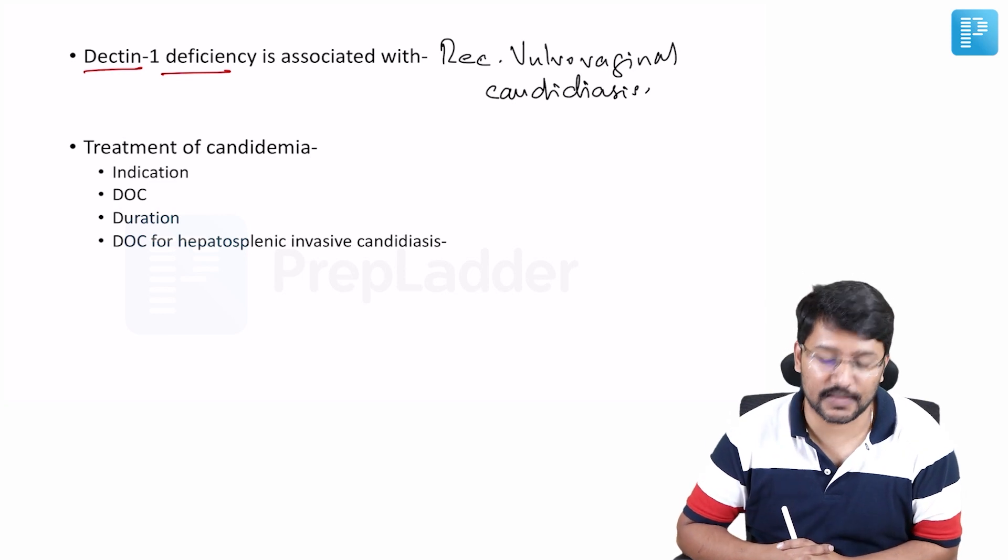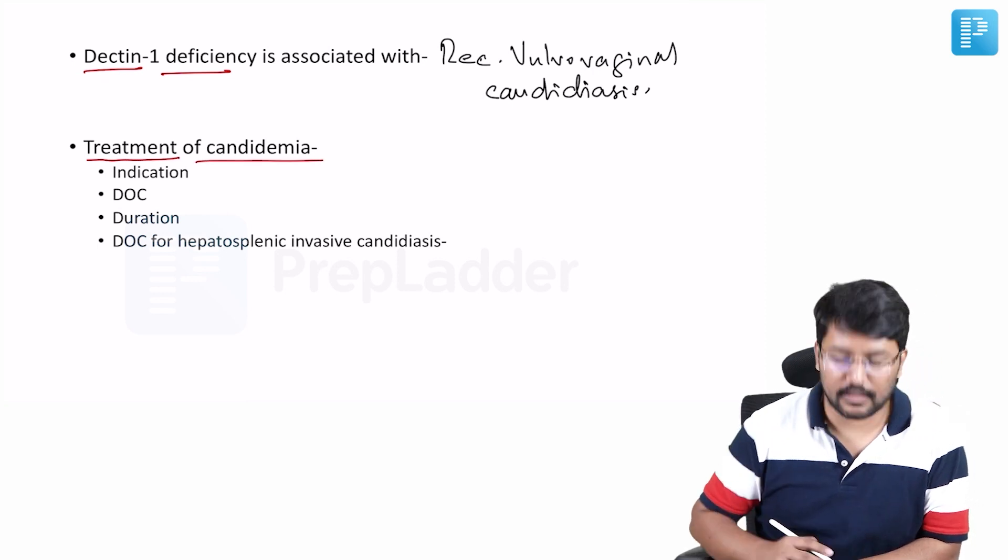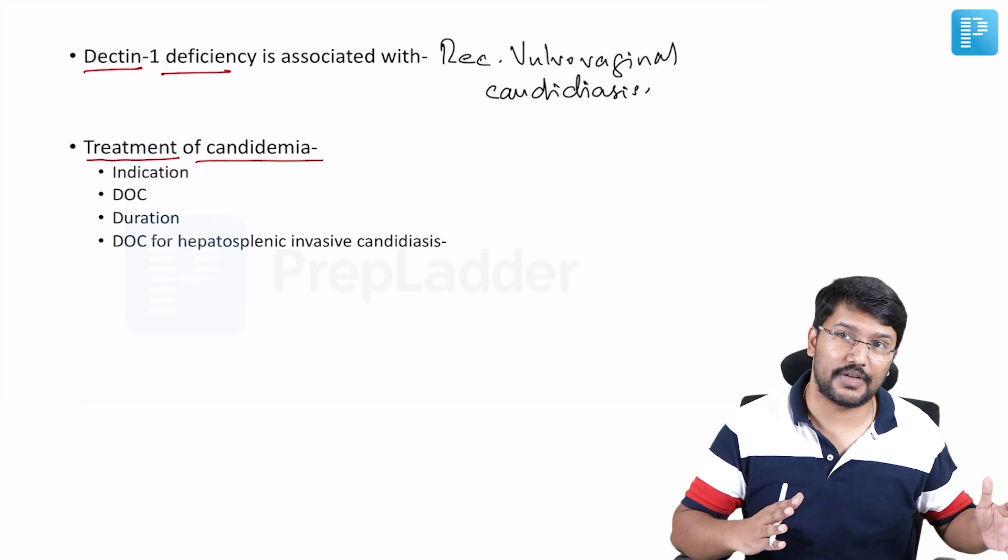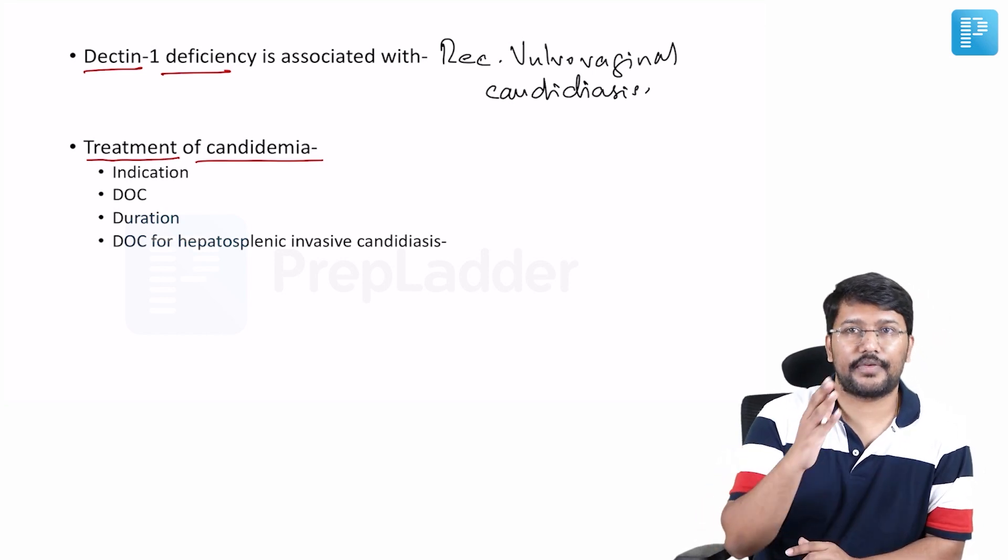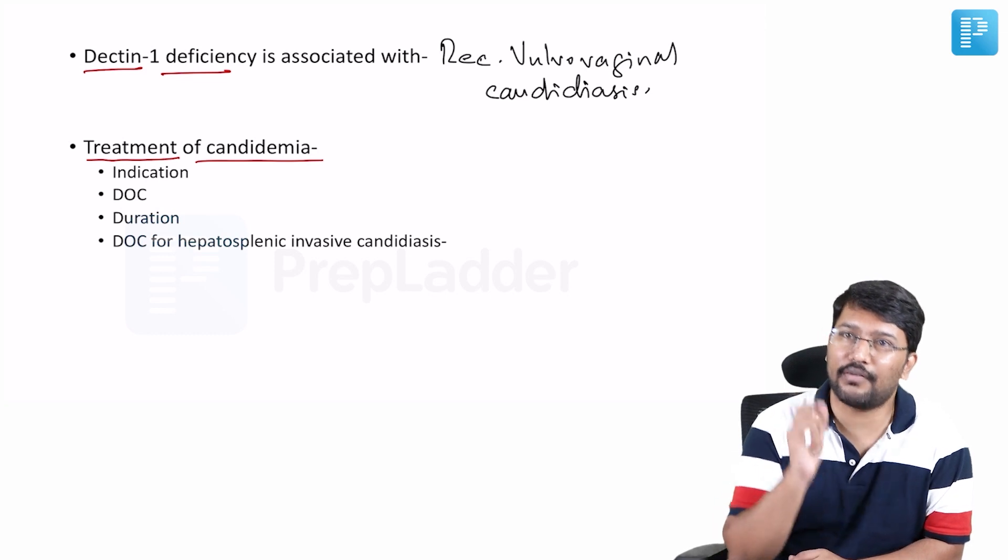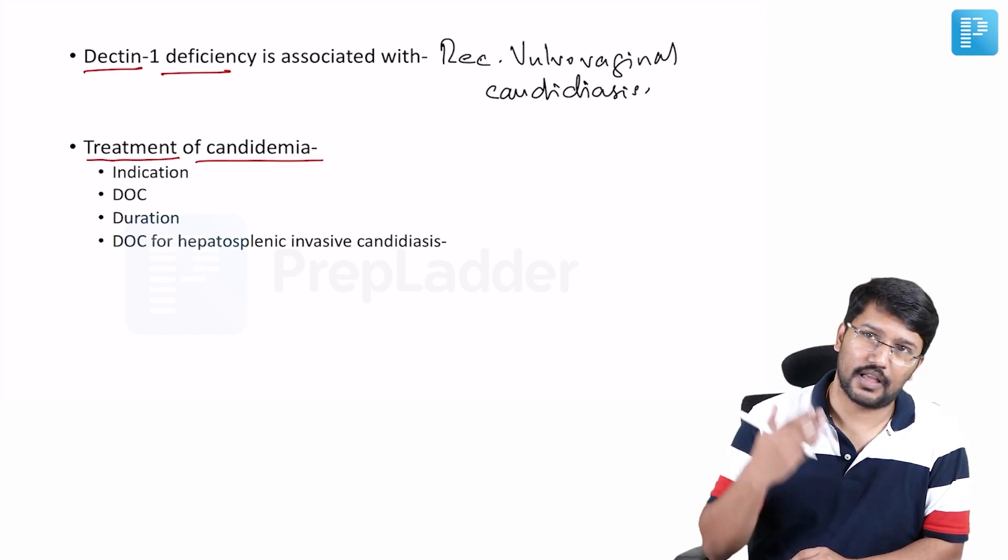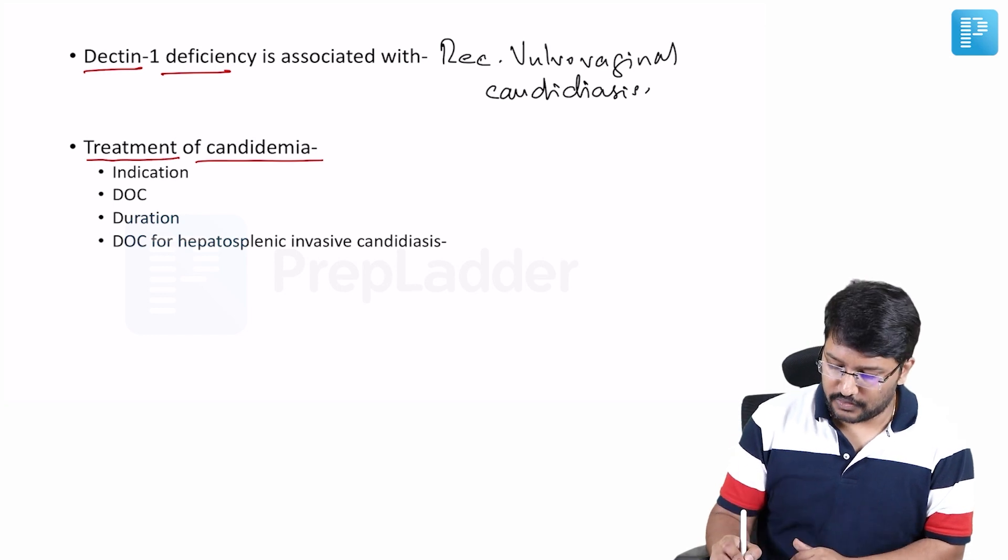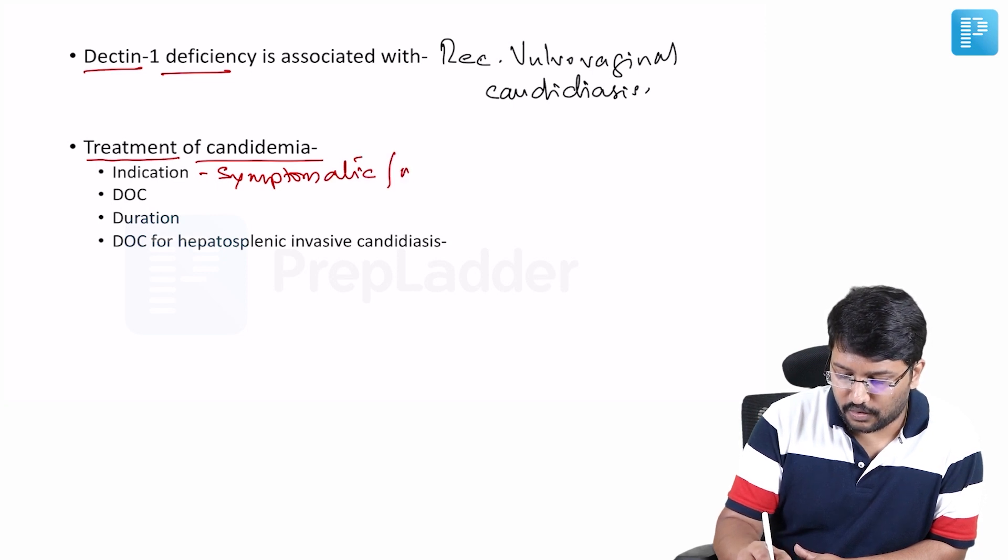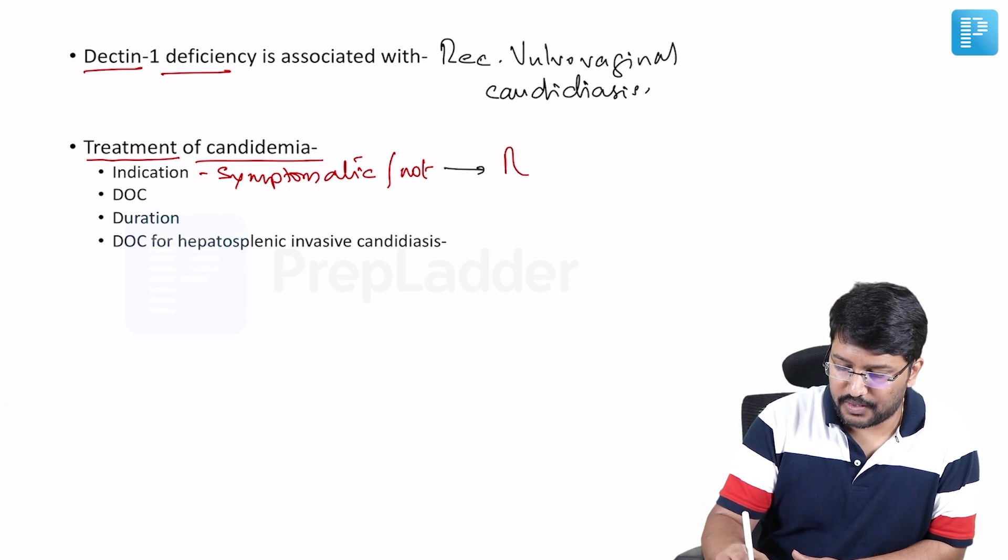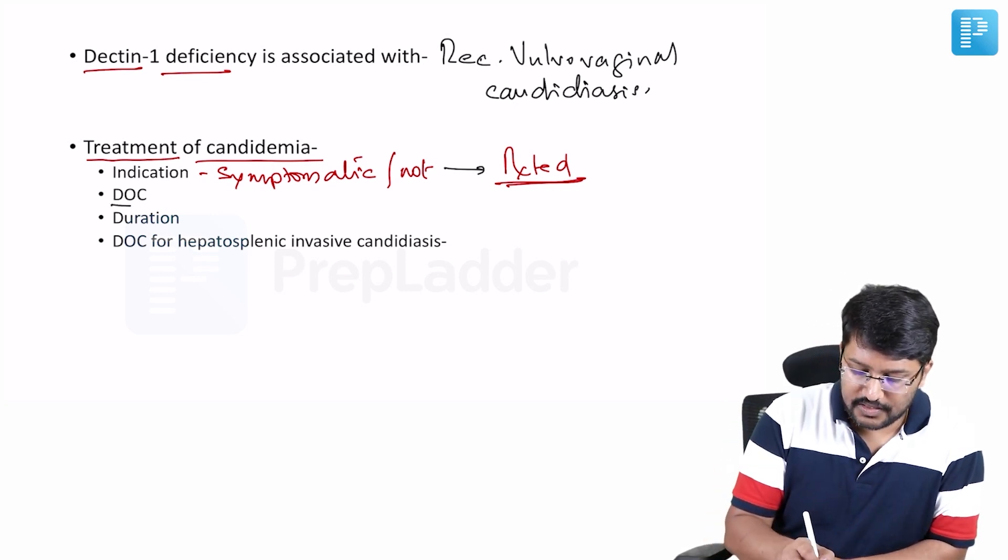So this is an additional point I want you to remember and then last we should know some things about the treatment of invasive candidiasis and in other words candidemia also. Now when is it indicated that we should treat invasive candidiasis or when is it indicated that we should be treating candidemia? The point you should remember is whether the patient has symptoms of candidemia or not. If you have isolated Candida from a sterile site, if you have isolated Candida which is not usually known to be vulnerable for infection, if I isolated Candida from the blood it should be treated. So whether symptomatic or not, whether symptomatic or not, all cases of invasive candidiasis should be treated. All cases of invasive candidiasis should be treated. All cases of candidemia should be treated.